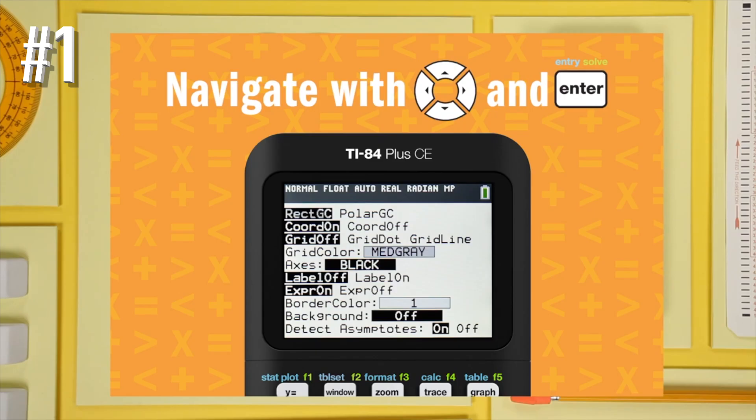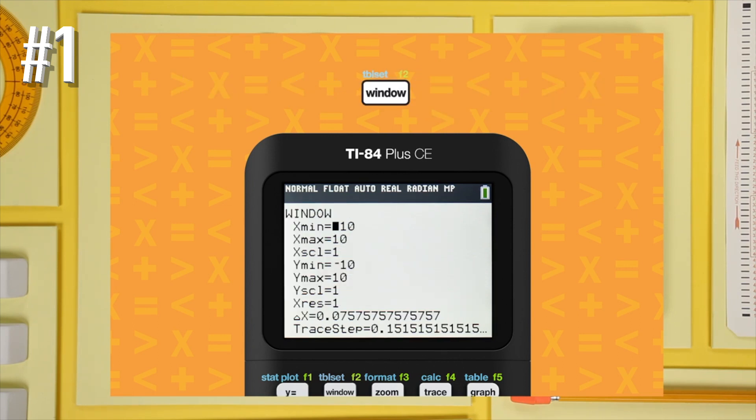The graphing calculator also comes in several different colors: black, pink, white, coral, gold, mint, gray, and blue, so you can find the one that suits your style.